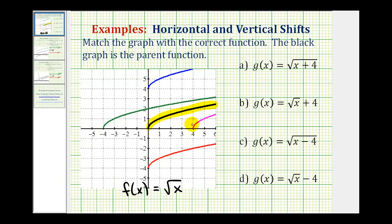Looking at the graphs, comparing the blue and red functions to the black function, notice how they're vertical shifts — either up or down. Comparing the green and pink functions to the black function, notice how these two are shifts left or right. So all these functions on the right either shift the function up, down, left, or right. Let's do a quick review of vertical and horizontal shifts.